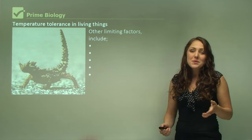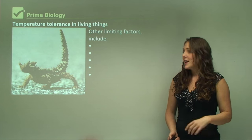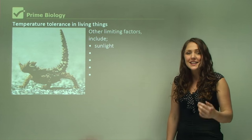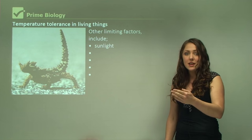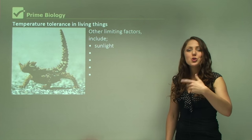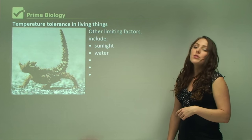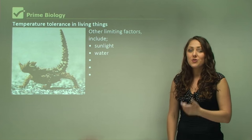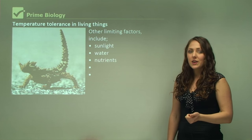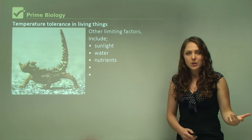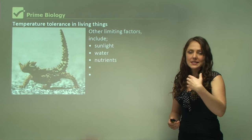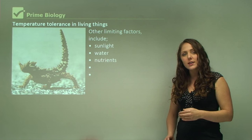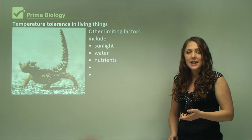There are other limiting factors besides temperature. These might include sunlight — especially for plants, which need some access to sunlight to grow and flourish. Then there's water, as all organisms need water to survive. Nutrients are also important; if there's not enough nutrients, sometimes there could be diseased plants, or even humans can get diseases from a lack of nutrients in their diet.